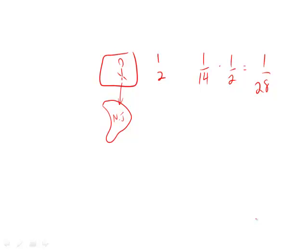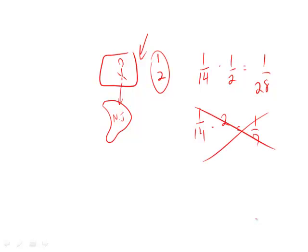Now let's say it was a different question — if Colorado had not half but twice as many people as New Jersey, then we would say 1/14 times 2, and Colorado would have 1/7. But that, of course, is a different question here. We're going for 1/28, which is answer choice A.